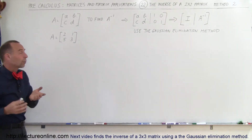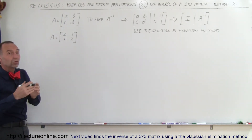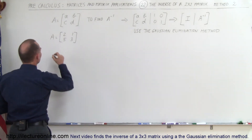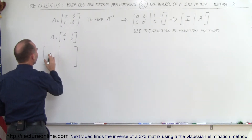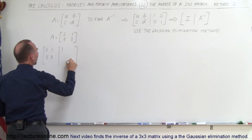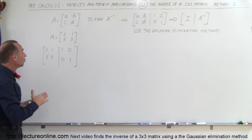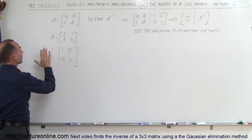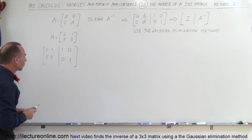Let me show you how that works with this simple example. We're going to do a 2x2 example. In the next video we'll try a 3x3 example using the same method. We set up an augmented matrix where on the left side we have the elements of matrix A, and on the right side we put the elements of the 2x2 identity matrix. Then using Gaussian elimination we turn the left side into an identity matrix, and the right side will show us the inverse.